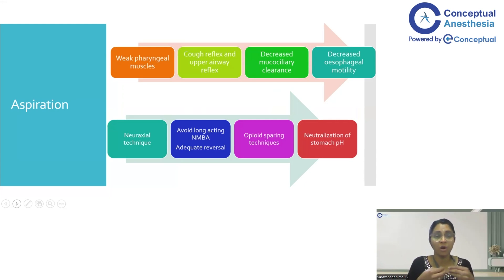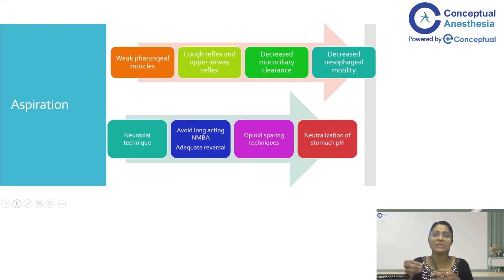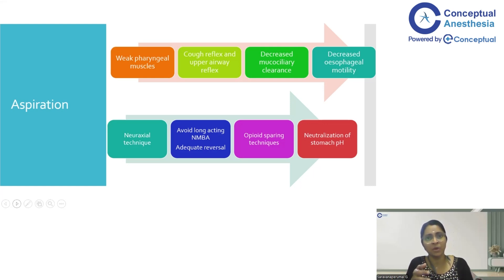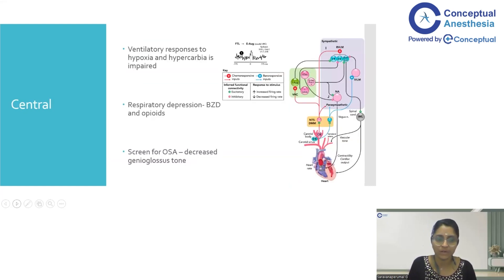The preventive strategies for aspiration include: whenever the patient is in full stomach and whenever possible, always administer neuraxial techniques. Always avoid longer-acting neuromuscular blocking agents, and reverse adequately — ensure that the TOF ratio is more than 0.9. Whenever possible, use opioid-sparing strategy using multimodal analgesia with paracetamol and regional nerve blocks. In surgeries prone for aspiration, you can also try to neutralize the stomach pH by using sodium citrate preoperatively.